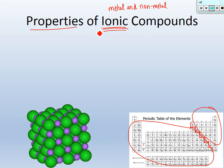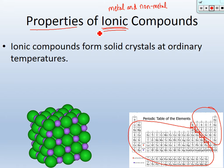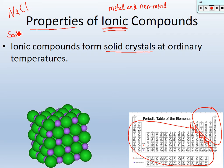In your chapter five guided notes it says that ionic compounds form solid crystals at ordinary temperatures — like room temperature. The most famous ionic compound is NaCl. How would you name this? Sodium chloride — that's table salt. We all have experience with it. Does it form a solid crystal at room temperature? Yes.